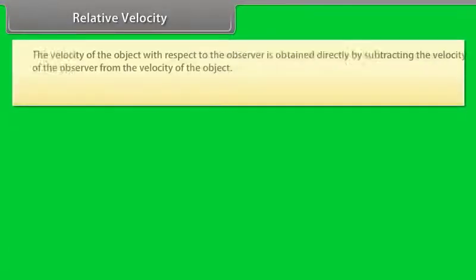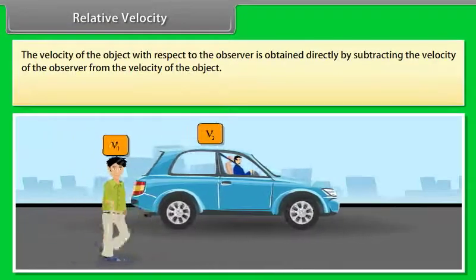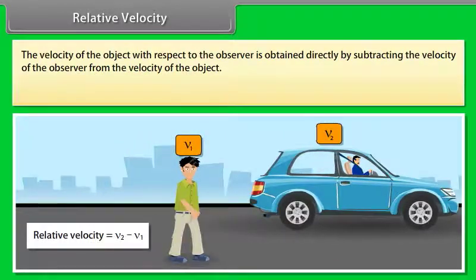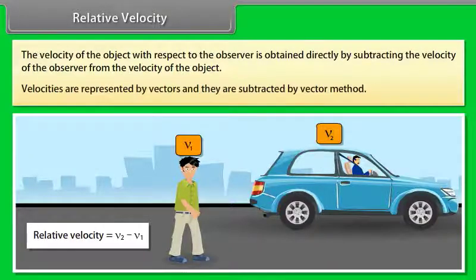Relative velocity. The velocity of the object with respect to the observer is obtained directly by subtracting the velocity of the observer from the velocity of the object. Velocities are represented by vectors and they are subtracted by vector method.